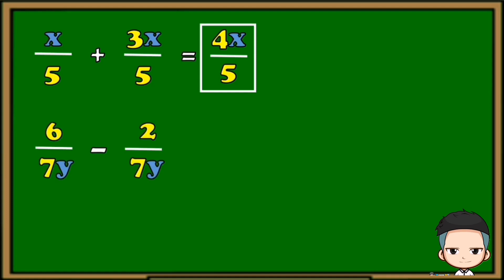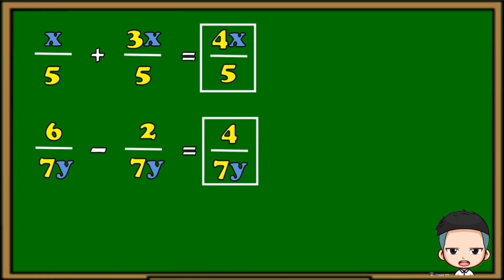Let's try another example: 6 over 7y minus 2 over 7y. Again, the denominators are the same, so we're going to copy 7y. And since the operation is subtraction, we're going to subtract the numerators. 6 minus 2 is 4, so 4 over 7y is our final answer.